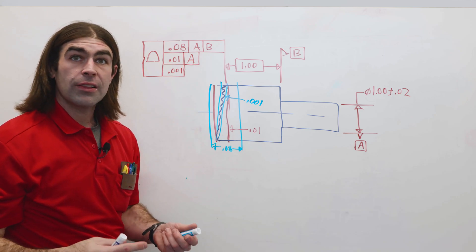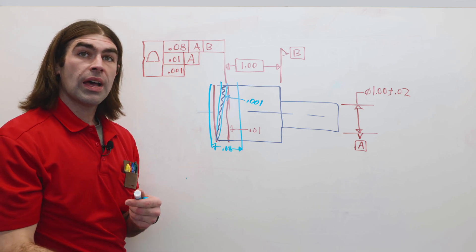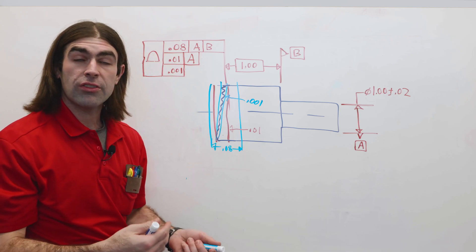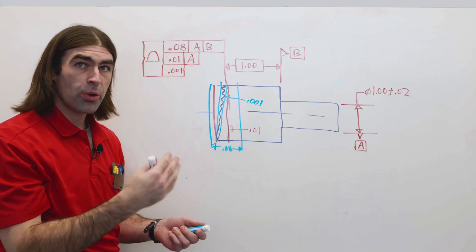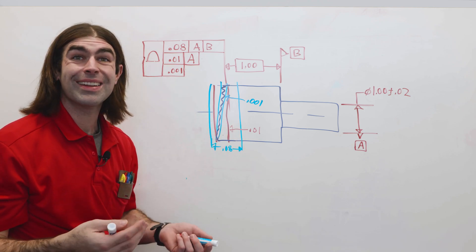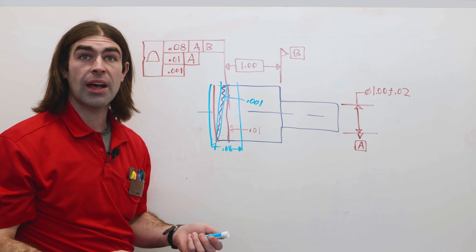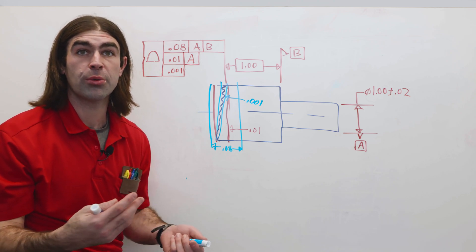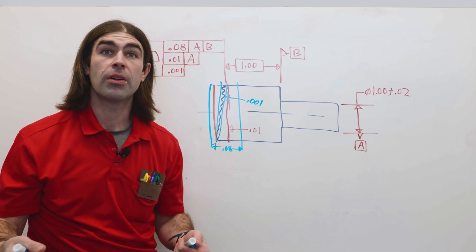The top one is the least restrictive in terms of tolerance, but the most restrictive in terms of setup. The bottom one is the most restrictive number-wise, but it's the easiest to set up form tolerances. You can move the part around to achieve a better number.